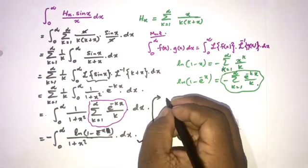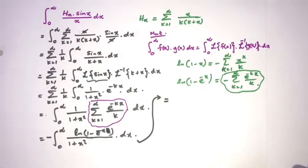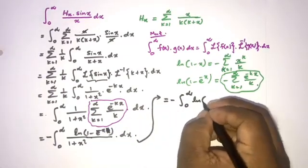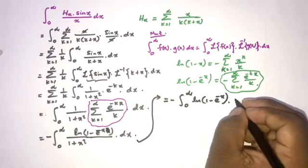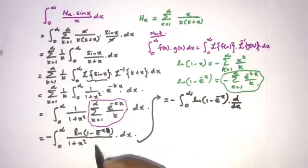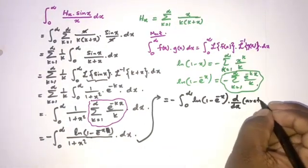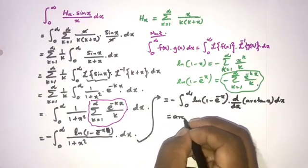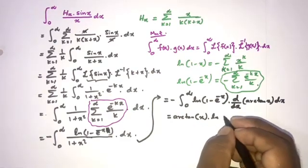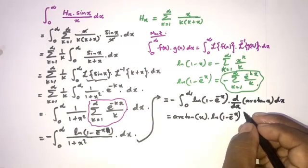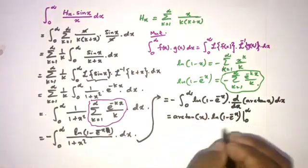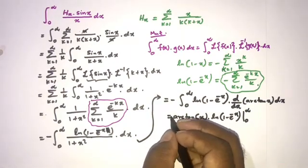Now I am going to use integration by parts. We take the first function as natural log(1 minus e^(−x)) and integrate 1/(1+x²) to get arctan(x) as the second part. So we have: minus [arctan(x) times ln(1 minus e^(−x))] from 0 to infinity.